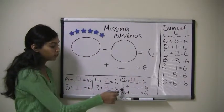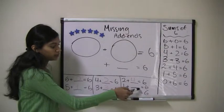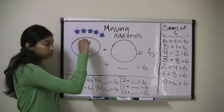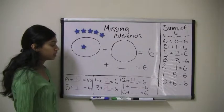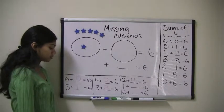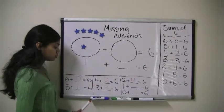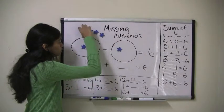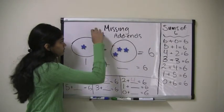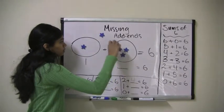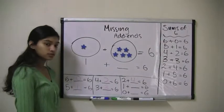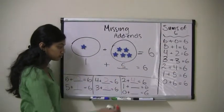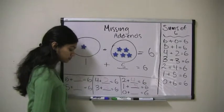Our next problem is 1 plus what equals 6? Well, we must put 1 star in the first area. That leaves 5 stars for the second area. So, 1 plus 5 equals 6.